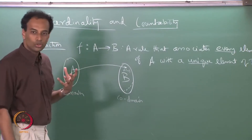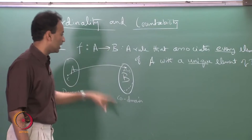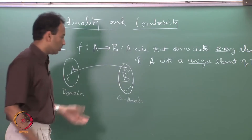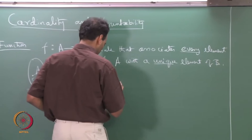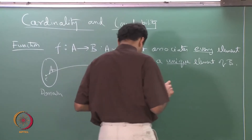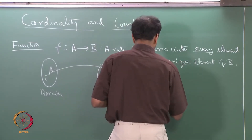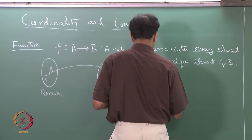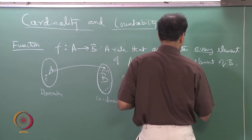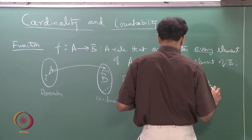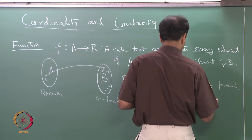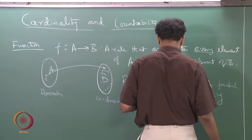The word range is used to describe only those elements of B which the function actually takes as values. We define the range R of the function as the set of all y in B such that there exists x in A for which f of x equals y.